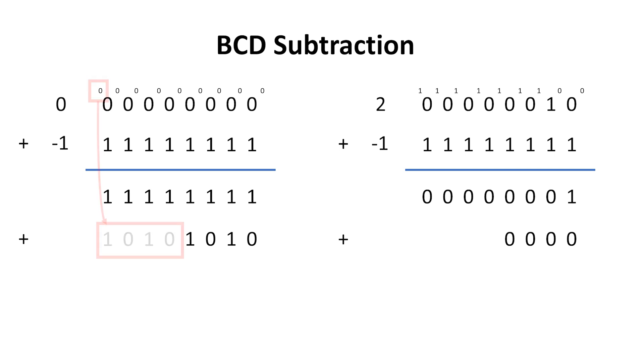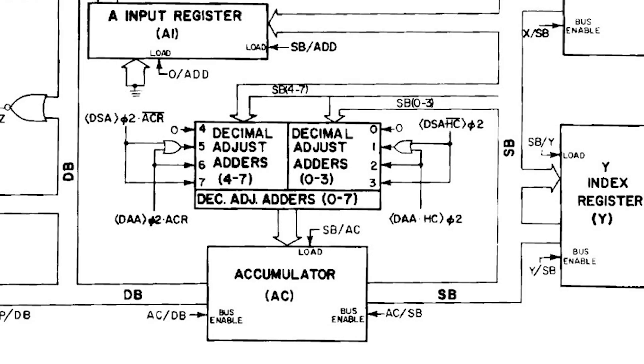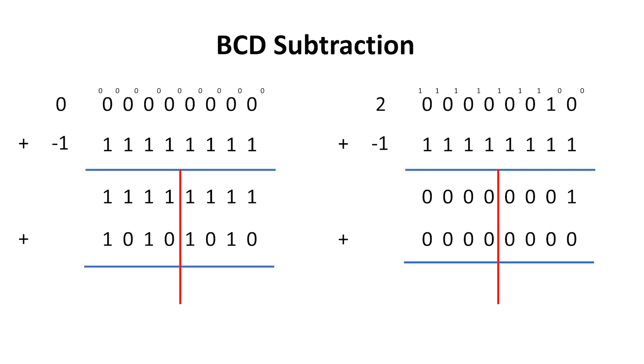We can do exactly the same for the top nibble when carry is clear. It'll bring this F back to a 9, and again we ignore the carry out from the decimal adjustment addition. When carry is set from the main ALU subtraction, we just add 0. This explains the hard wiring of either 0 or A in each nibble of the decimal adjust unit in the 6502 design. I add AA while blocking carry outputs from the decimal adjustment additions, and I get the result of 99, which is what I want. On the right, I add 0, so the number from the subtraction in the ALU remains the same.